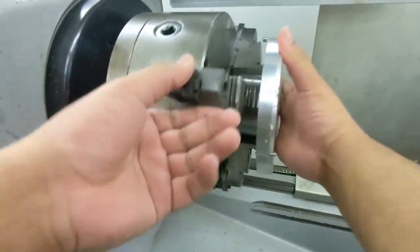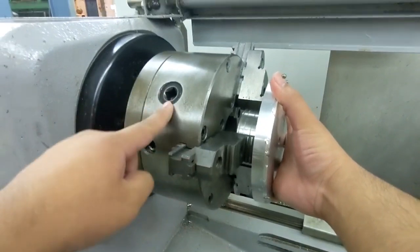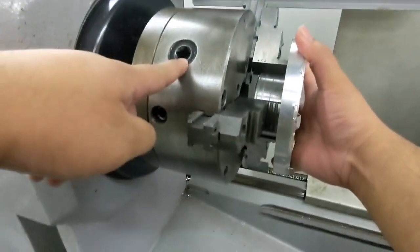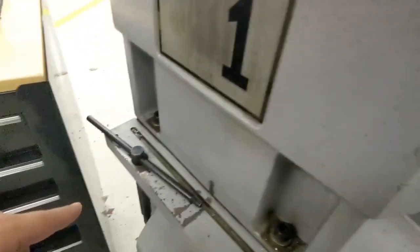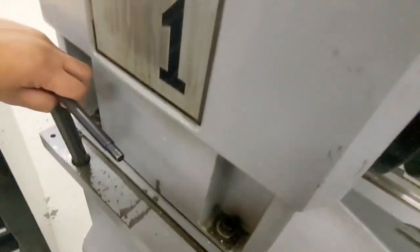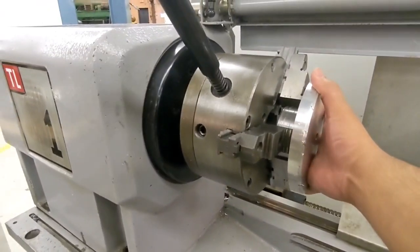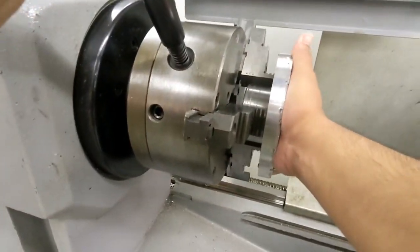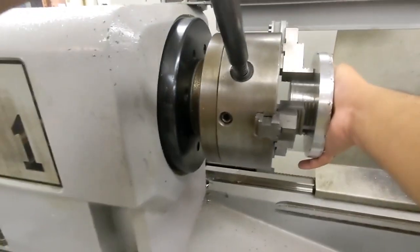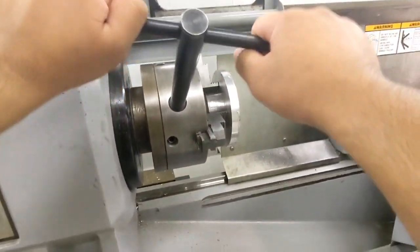And to tighten this we need the chuck key that would be going to this keyhole right here. So it would be here. So to tighten this you have to rotate it clockwise. So it should be good.